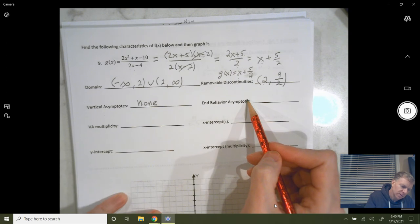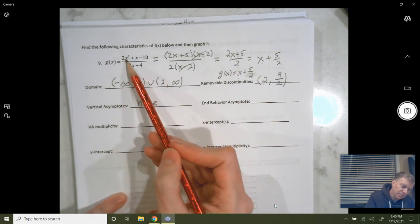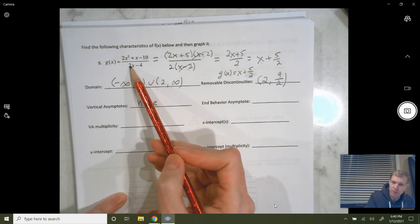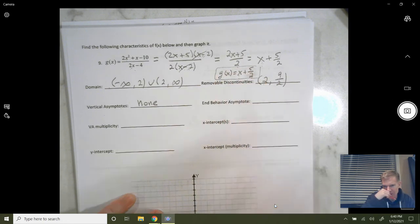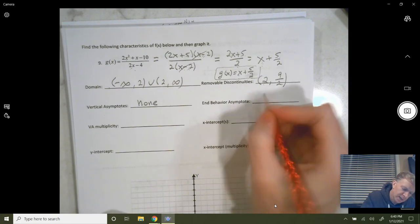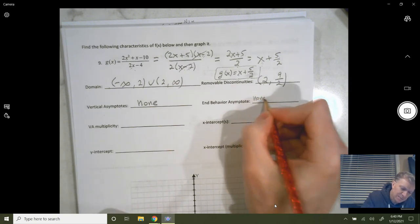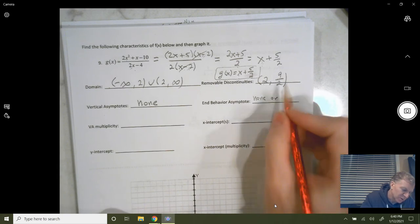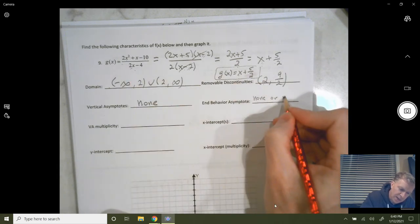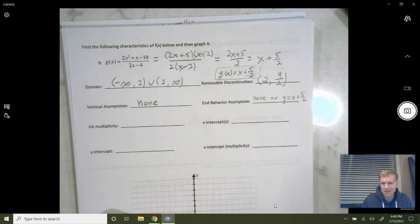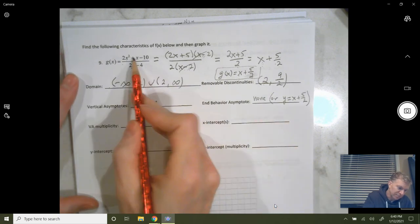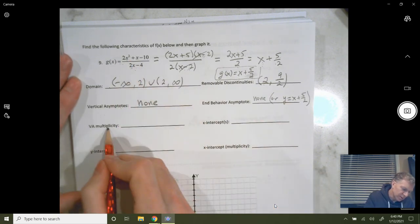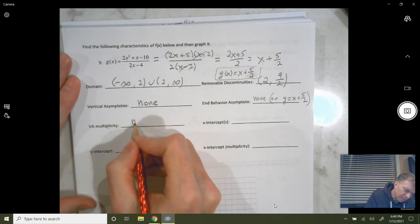End behavior asymptote, now this is a little tricky, because it's top-heavy by one degree, so that makes you think there's a slant asymptote. Tricky thing is, that slant asymptote is actually your entire function, so it's not really an asymptote. So you could either say none, or I'd even accept it if you said that your asymptote, if you did this division and you got this, you could say y equals x plus 5 halves. It's not technically an asymptote, because it's your graph. But if you said that, I would accept that. Following the rule of dividing, because it's top-heavy by one degree. Vertical asymptote, multiplicity, not applicable, because there are none.